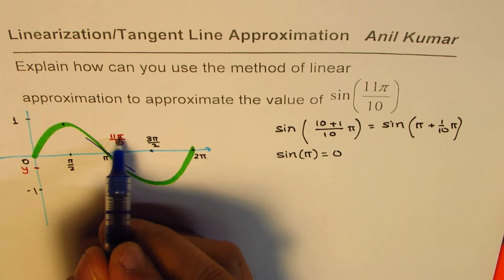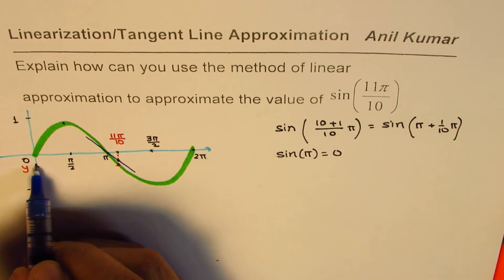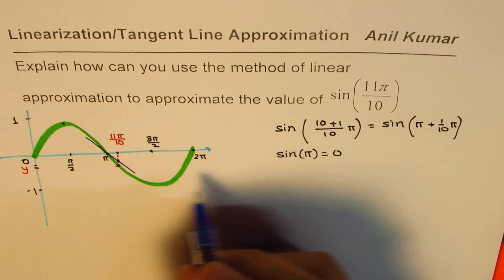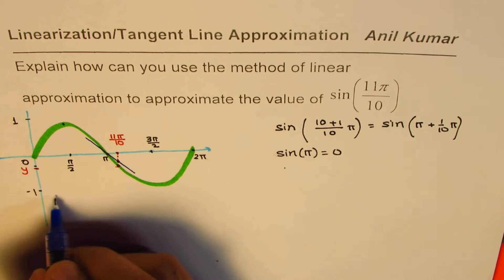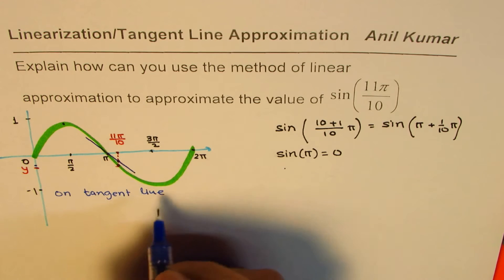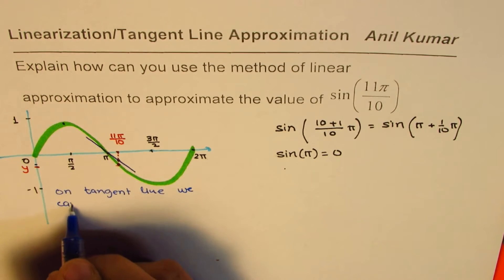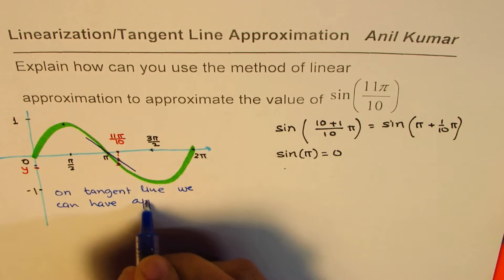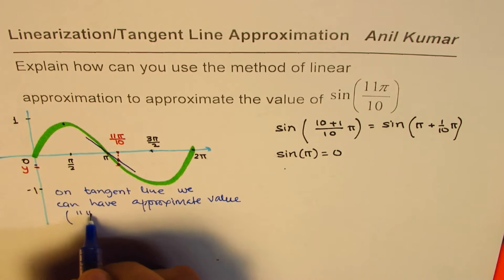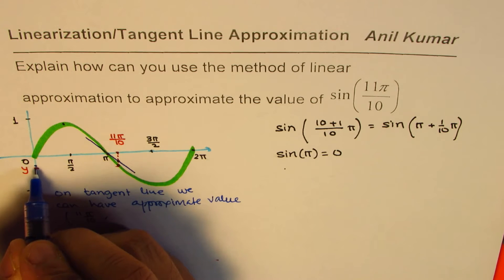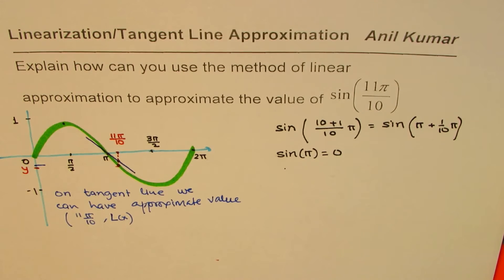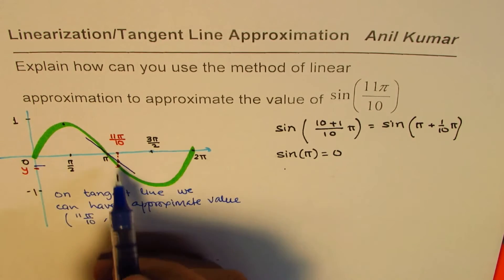At 11π/10, the y-value on the tangent line will be slightly different from the actual curve value — that is the approximation. On the tangent line we can have an approximate value at 11π/10, and let's call this value L(x), the linear approximation. As you can see, the linearly approximated value is very very close to the actual y-value.